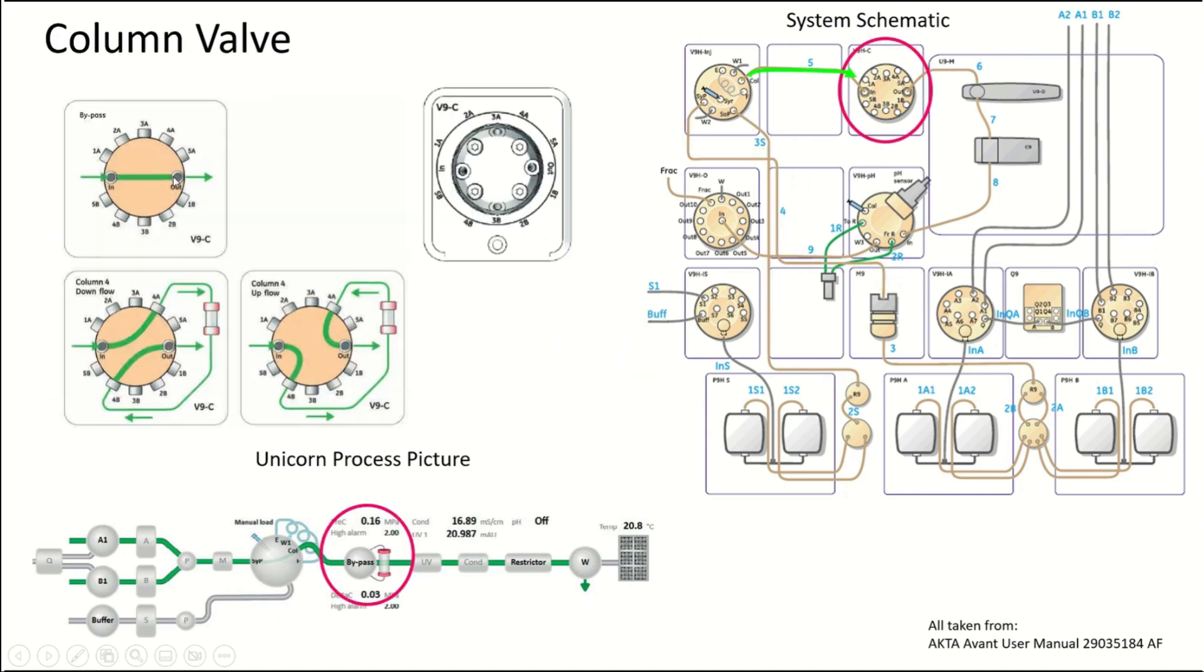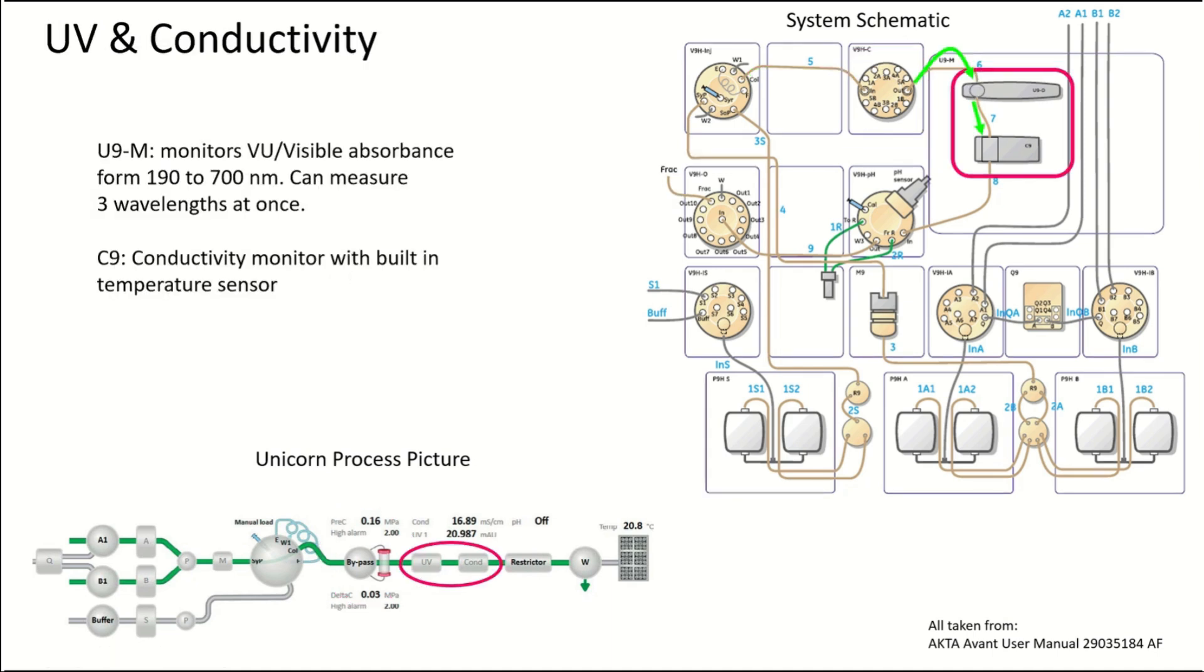Next we have the column valve. The column valve is really neat—it can house five different columns at the same time, and each column can run in both downflow and upflow positions. After the column valve, we have the UV monitor which can see any UV absorbance from 190 to 700 nanometers and can measure three wavelengths at the same time.